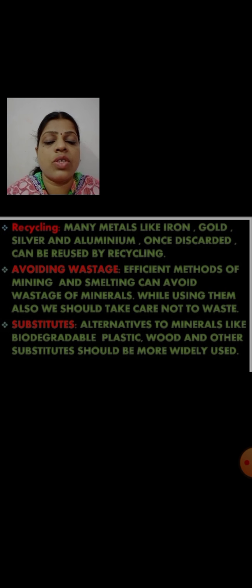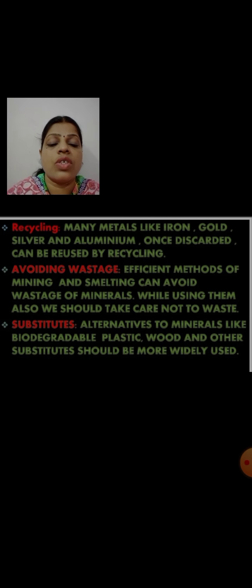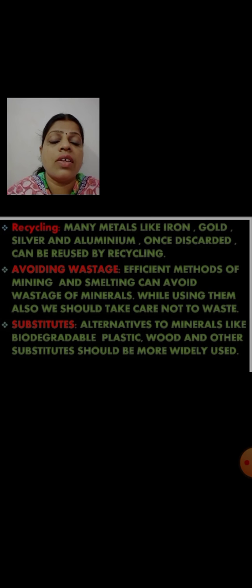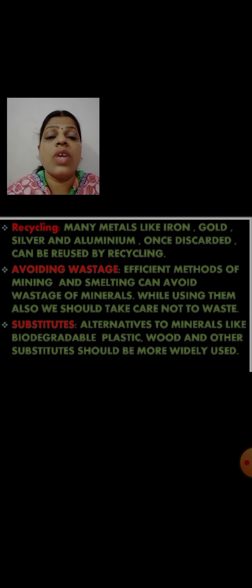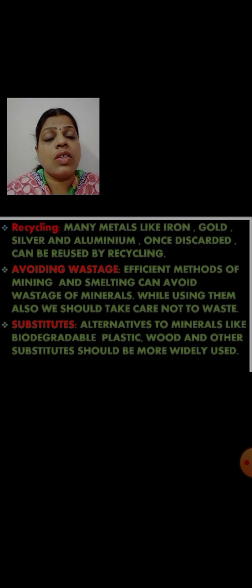The next conservation method is the use of substitutes. Alternatives to minerals, like biodegradable plastics, wood, and other substitutes, should be more widely used. For these minerals, some other alternatives are available, and if we widely use such things, we can conserve more and more resources for our country. These are the different ways through which we can conserve our resources and save our future generations.